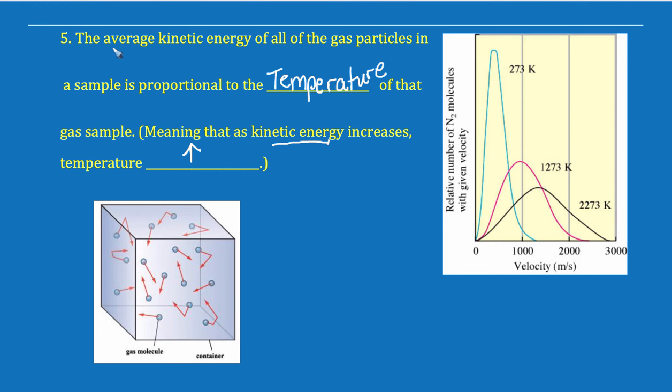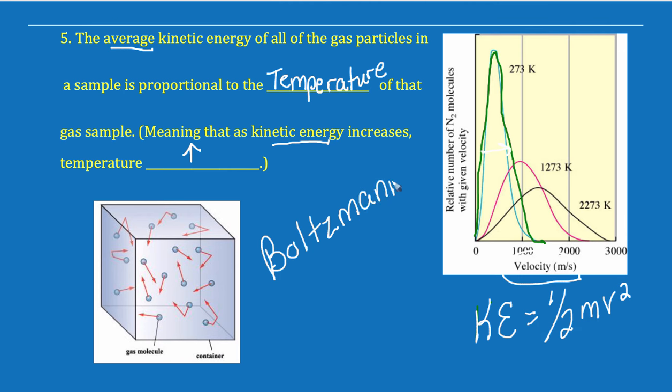Now, you notice that it said average kinetic energy. These molecules have a kinetic energy that is distributed over a velocity. So, kinetic energy is, if you remember from seventh, eighth grade science, one-half mass times velocity squared. You always want to pay close attention to what that x-axis is. Do you notice there's a distribution here? That distribution is called a Boltzmann distribution. It's a statistical distribution. And I want you to notice what happens as